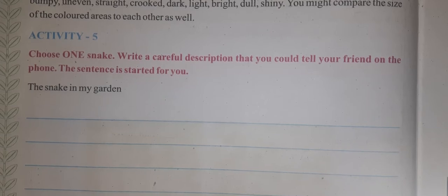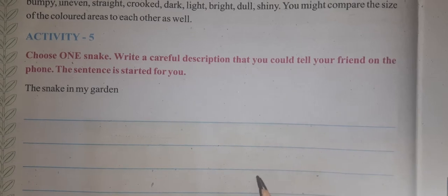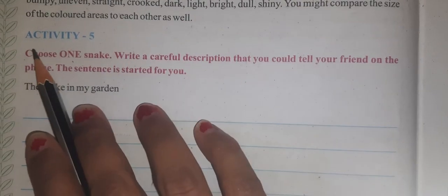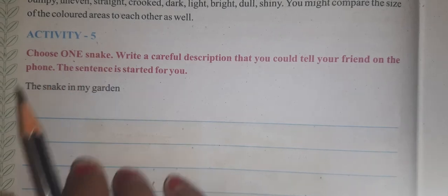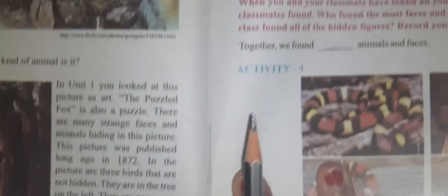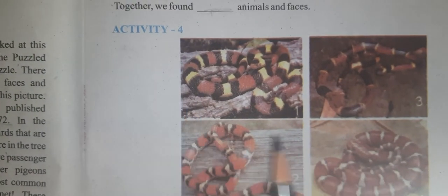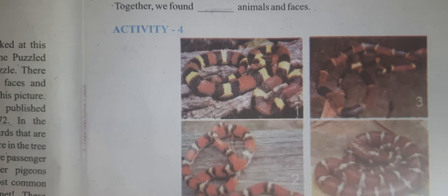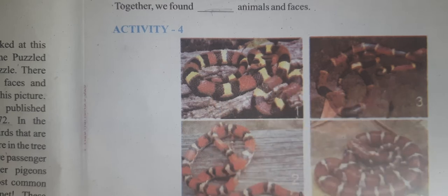Unit 2 is about 'Towards Eye View.' Children, we have completed in our previous video Activity 4. In Activity 4, we learned about snacks. We were given 4 different types of snack pictures and we described all the pictures.